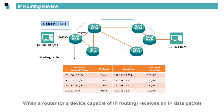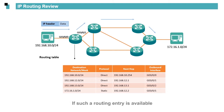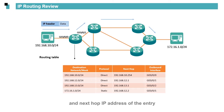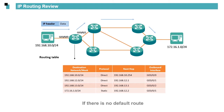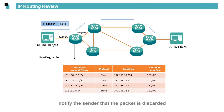When a router, or device capable of IP routing, receives an IP data packet, it obtains the destination IP address from the packet's IP header and searches its routing table for a routing entry that best matches the destination IP address. If such a routing entry is available, it forwards the packet based on the outbound interface and next hop IP address of the entry. If no such routing entry is available, it checks whether there is a default route. If there is no default route, it discards the IP packet and sends an ICMP unreachable message to the source IP address of the packet to notify the sender that the packet is discarded.